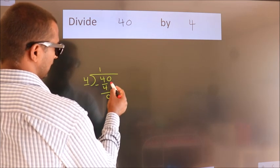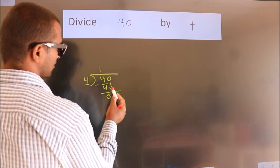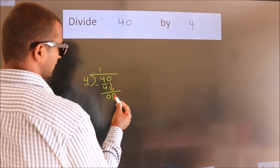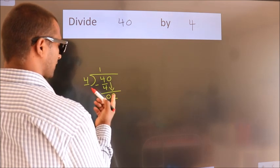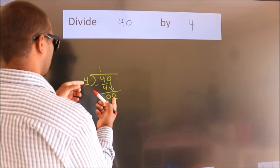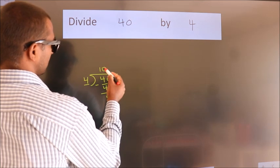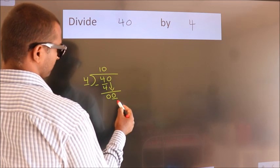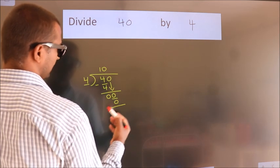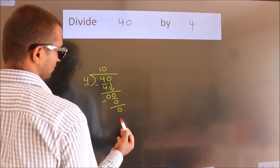After this, bring down the beside number. So 0 comes down, so 0. When do we get 0? In the 4 table. 4 times 0 is 0. Now we subtract. We get 0.